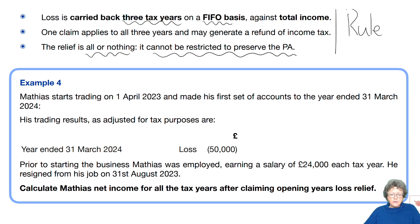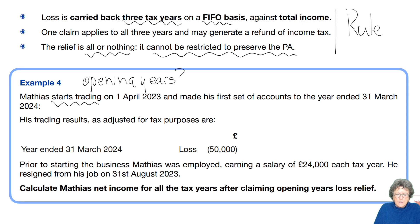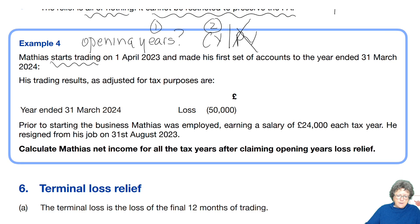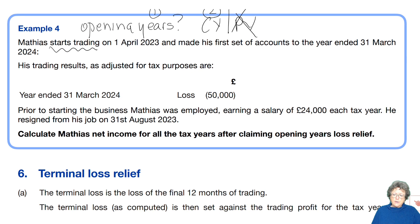Matthias starts trading on the first of April and makes his first set of accounts — so that's your hint: he starts trading, so your brain would go to 'opening years' potentially. Maybe current year, previous year? There's no previous year because he's only just started trading. First accounts to March 24, he made a loss. Prior to starting in business, Matthias was employed earning a salary of £24,000 per year, and he resigned from his job on the 31st of August. We are to calculate Matthias's income for all years after claiming opening years relief.